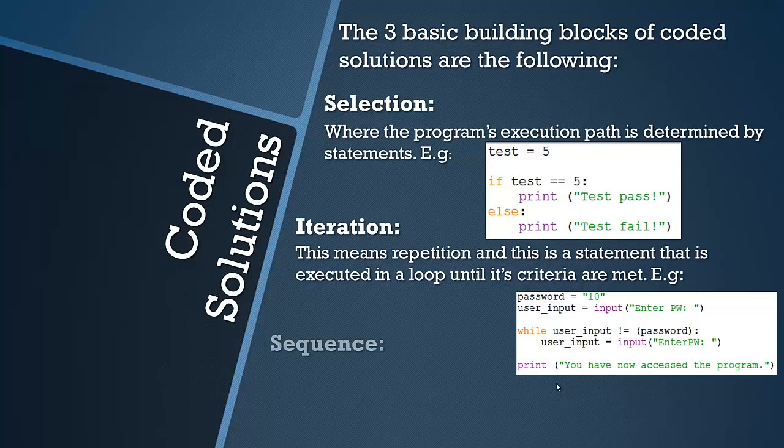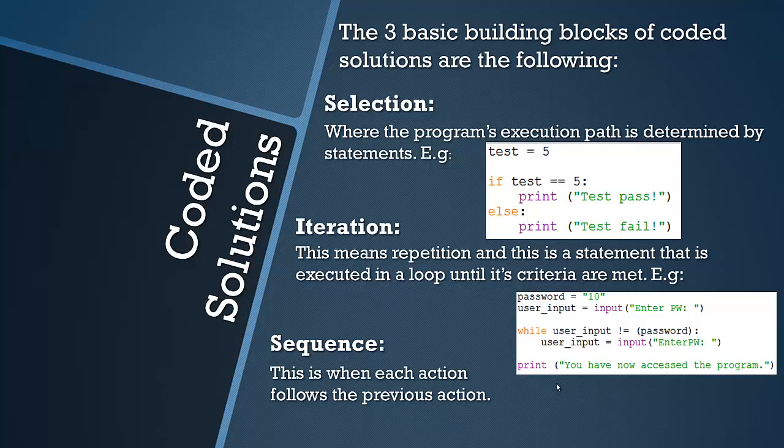So that's the second of the three. There's also sequence and this is when each action follows a previous action, basically line by line, which is pretty much what all programs are with just a few selections and iterations in it.